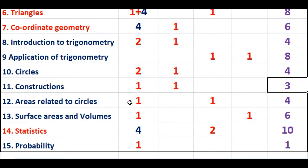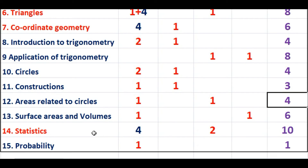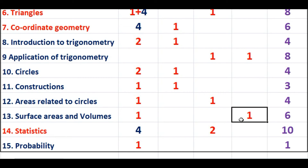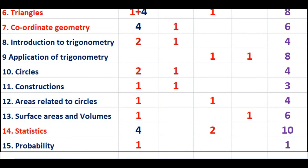From the chapter Constructions, one question of one mark and one question of two marks, so a total of three marks will be asked. From Areas Related to Circles, one question of one mark and one question of three marks. From Surface Area and Volume, a total of six marks will be asked.